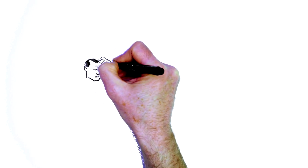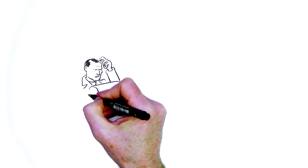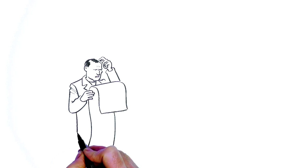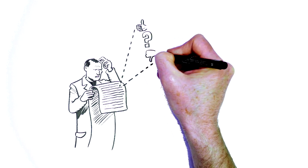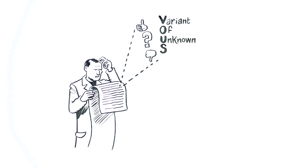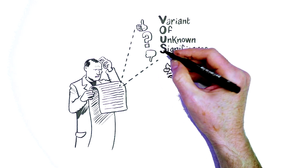Some types of variations are more damaging than others. Occasionally scientists find a variation in a gene and it is unclear if it is harmful or harmless. This is called a variant of unknown significance known as a VUS.